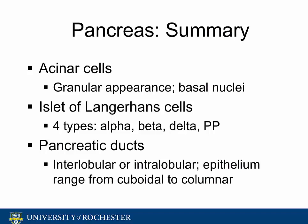In review, pancreas histology may be divided into acini, islets, and ducts. Acinar cells make up the majority of the pancreatic lobules and are densely packed with organelles and basal nuclei. There are four types of islet cells, but they are essentially indistinguishable through H and E staining. The pancreatic ducts are lined by epithelium which varies from cuboidal to columnar. This concludes our review of normal pancreatic histology.